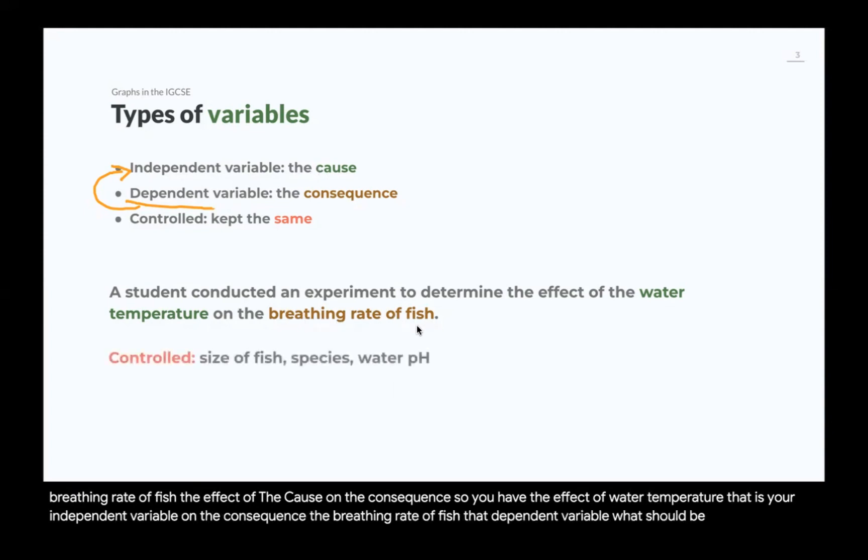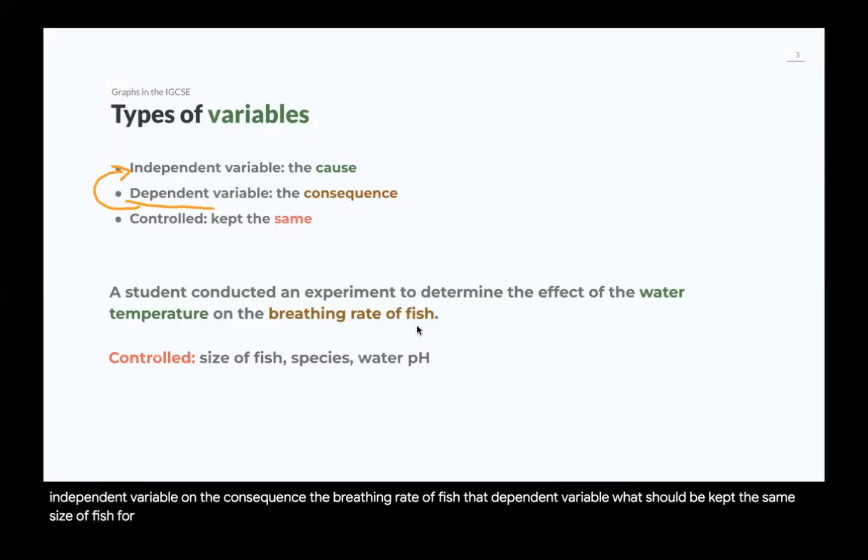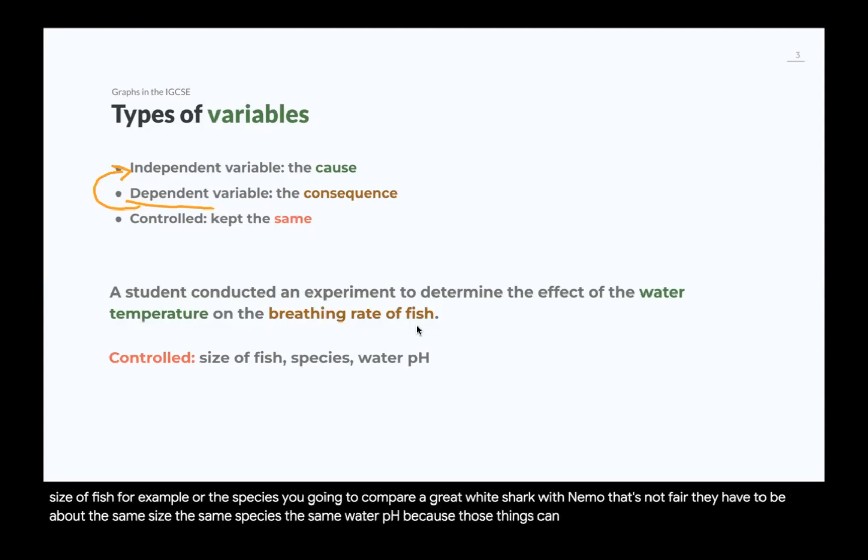What should be kept the same? Size of fish, for example. Or the species. You're going to compare a great white shark with Nemo. That's not fair. They have to be about the same size, the same species, the same water pH, because those things can affect the breathing rate of the fish.